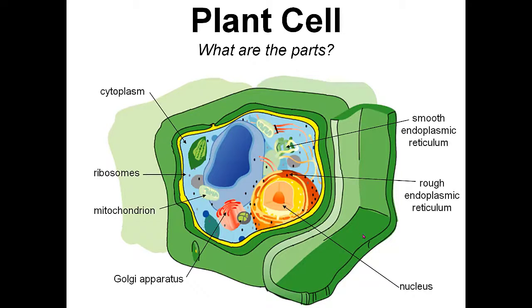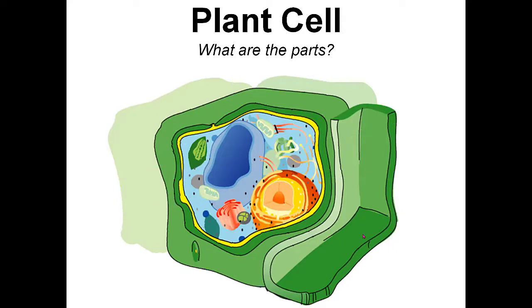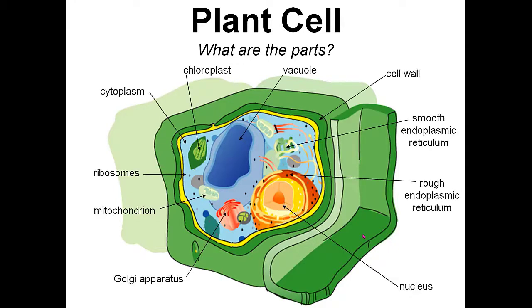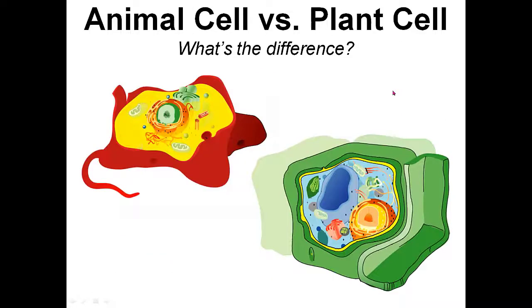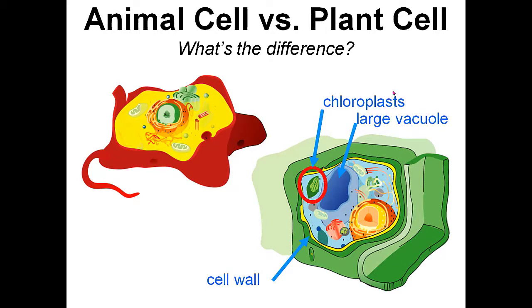First we covered the common parts between plant cell and animal cell. Later on, we proceeded with the parts of the plant cell which are not found in the animal cell, like chloroplast, vacuole, and cell wall.